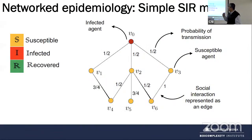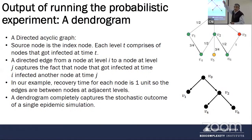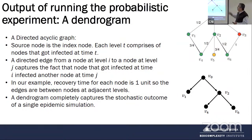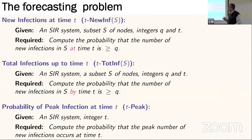Now I'll touch on the probabilistic version, which is useful for contagion models. It's really the same model, but the state updates and interactions are given as probabilistic functions. Here's a simple example: the SIR model for disease dynamics. You toss a coin and infect a susceptible node with probability P for each infected neighbor. What this gives you is a large Markov chain over infection states. We studied a specific problem: given an SIR system with a subset of nodes S, compute the probability that the number of new infections in S exceeds some threshold at a given time.